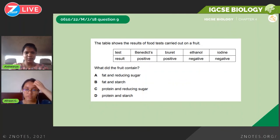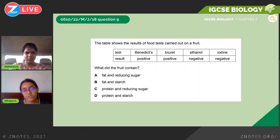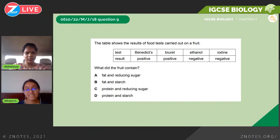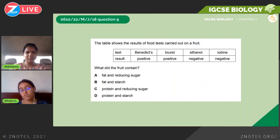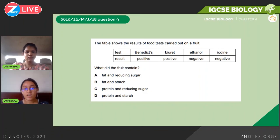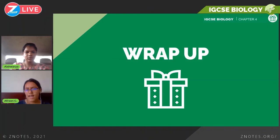Next is May/June 2018, Paper 2: A table shows food test results. Benedict's test is positive — so reducing sugar is present. Biuret's test is positive — so protein is present. Ethanol test is negative — so fats and oils are not present. Iodine test is negative — so starch is not present. Therefore the food contains protein and reducing sugar — the answer is C. That's Chapter 4 of IGCSE Biology.